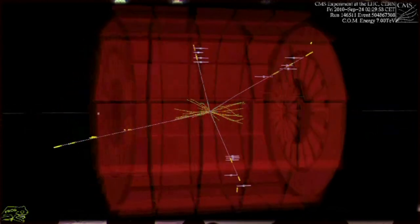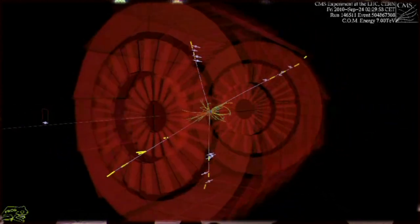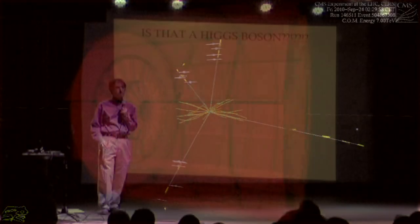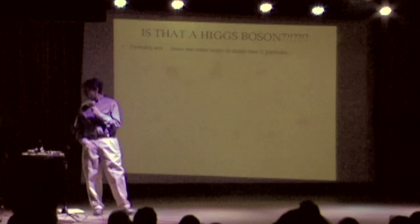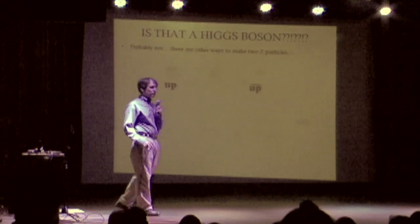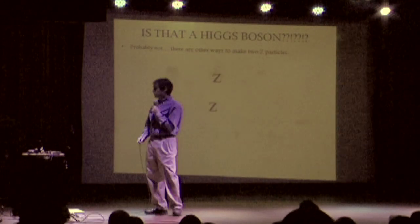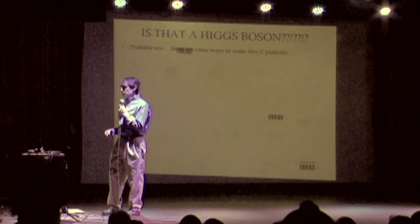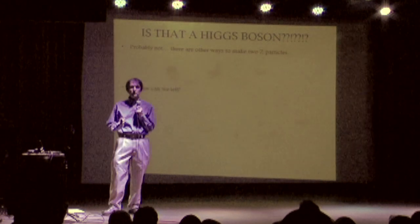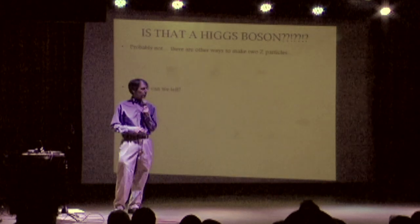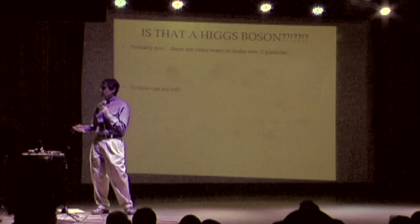So, is that a Higgs boson? I don't know. Maybe? Probably not, because Higgs particles are rare, and there are other ways to make two Z particles. You can just make them directly. So I can't tell you by looking at one collision that looks like that whether it's a Higgs particle or not.